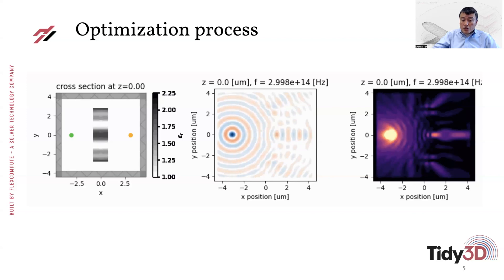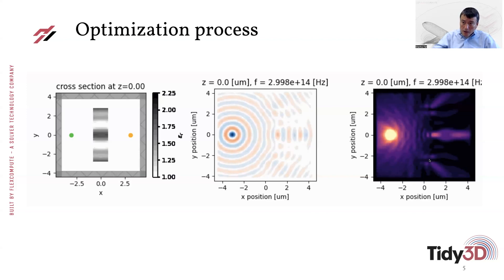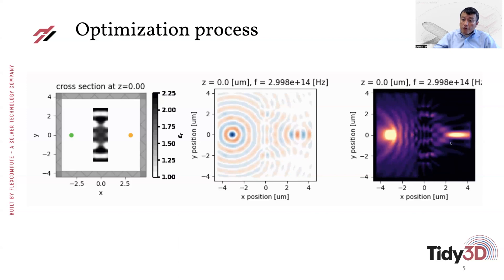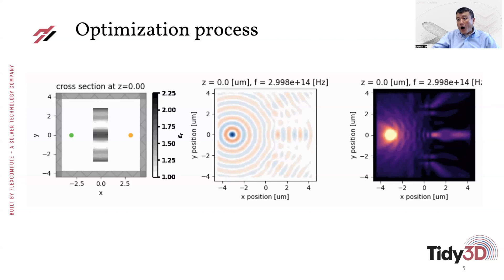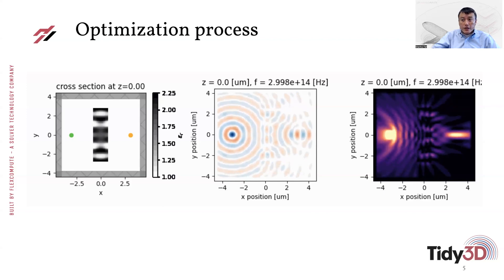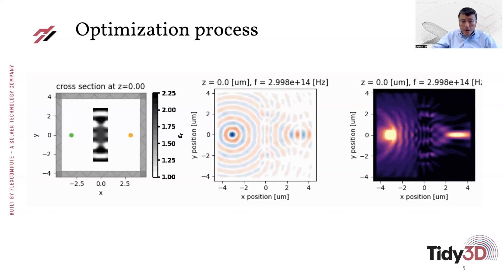So what you can see is that as we adjust the permittivity distribution inside the rectangle, very quickly the field pattern starts to go into this focusing behavior. And on the intensity distribution in particular, you very clearly see the focusing of light at the monitor point. And so this shows you that with this kind of method, you could actually just let the computer figure out what the optimum device configuration needs to be in order to achieve the functionality that you would like to achieve.